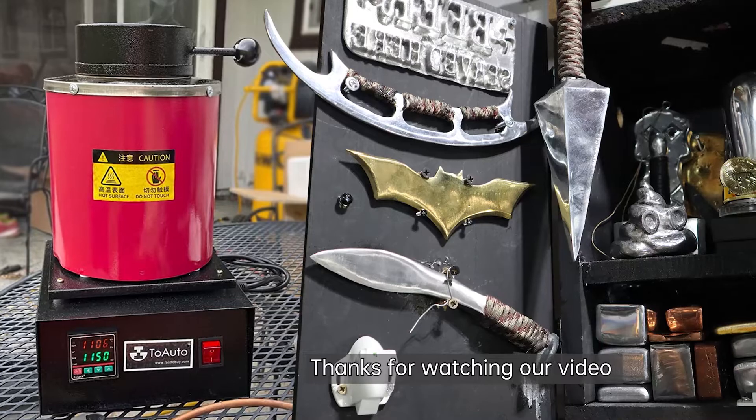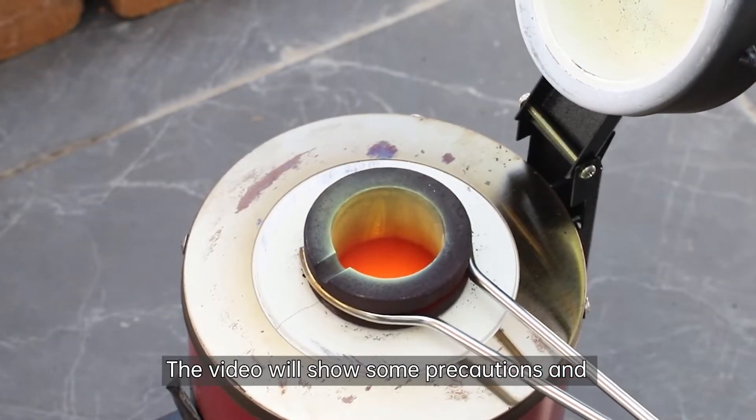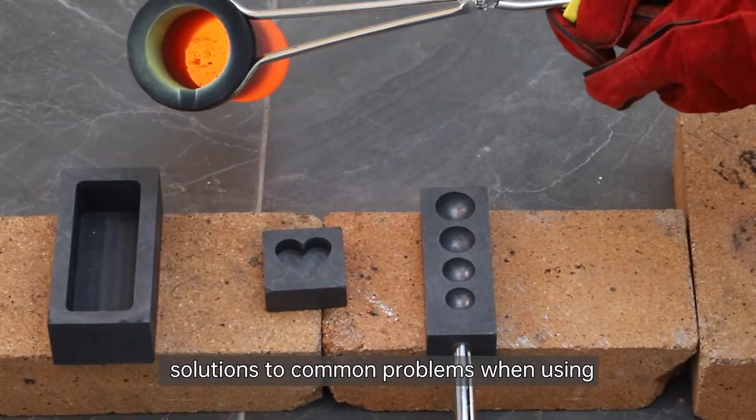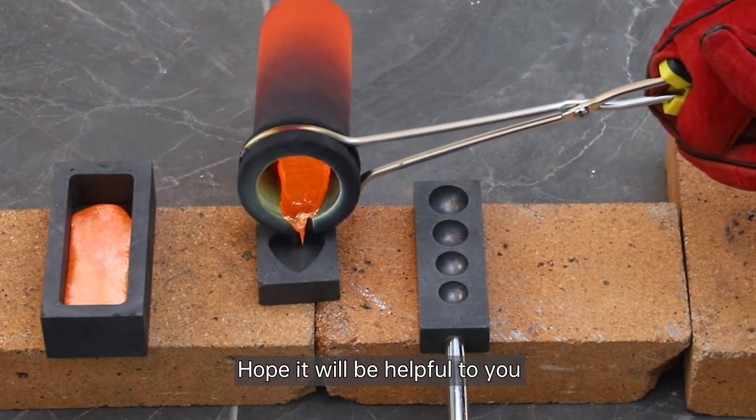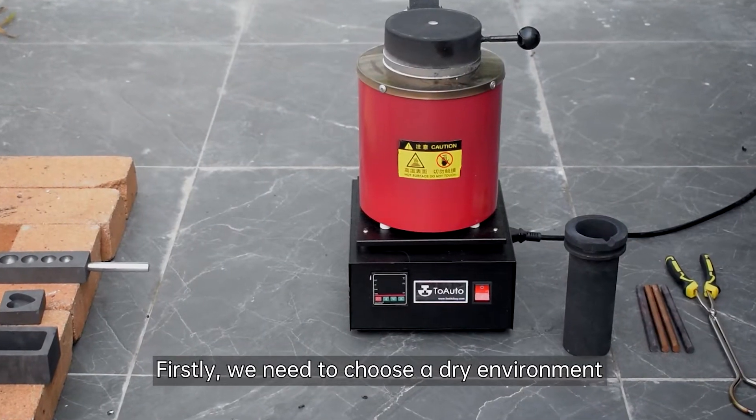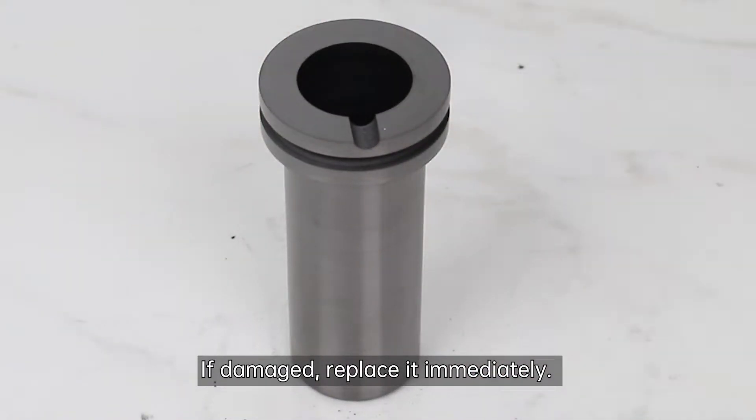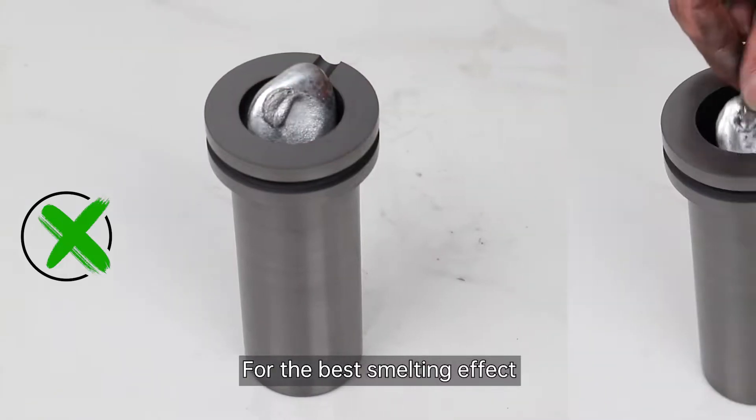Hello everyone, thanks for watching our video for electric metal melting furnace. This video will show precautions and solutions to common problems when using. Hope it will be helpful. Before operation, firstly choose a dry environment, then check whether the crucible is damaged. If damaged, replace it immediately for the best melting effect.